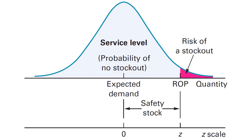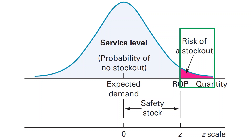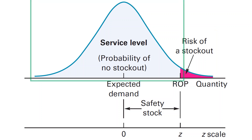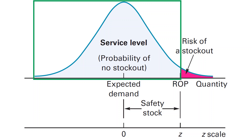The variation in demand is assumed to be normally distributed with a mean value mu equals d-bar. As you know, the normal distribution is represented by this figure. In our case, the purple area represents the probability of stock out, while the remaining area is the probability of no stock out, or the service level.